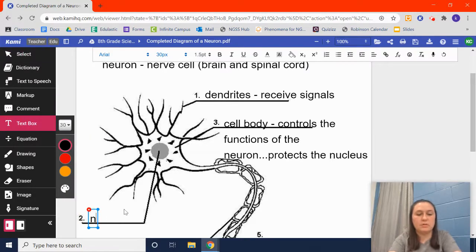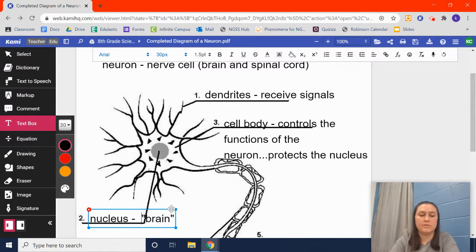Number two is the nucleus. If you remember from last year, we used the same definition for nucleus. That's the brain. The brain of a cell is a nucleus.